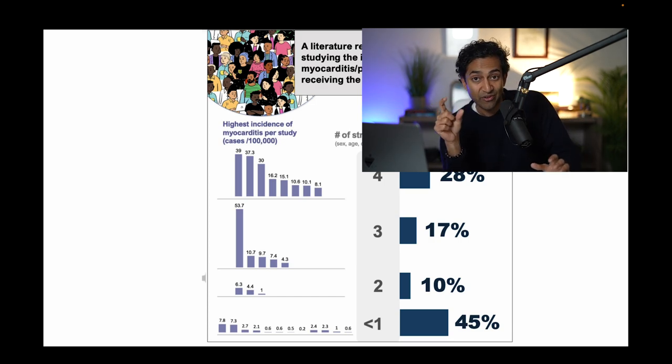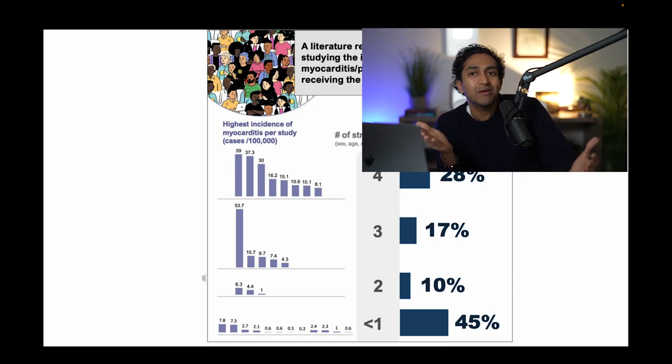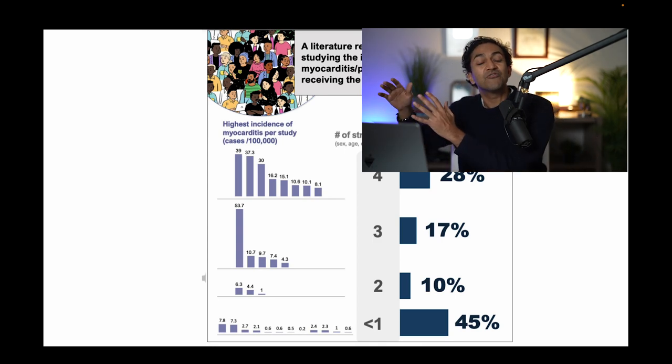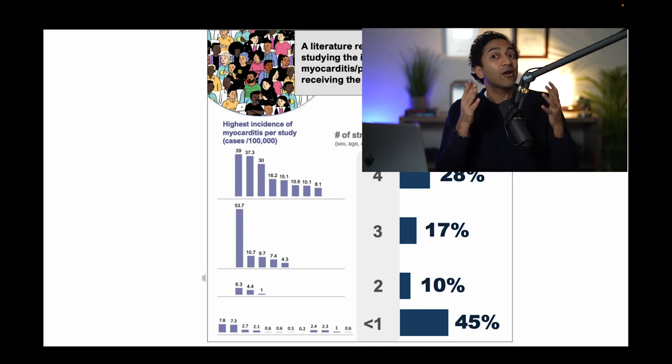And some analyses are wise enough to break it out by all those four stratifiers. And others break it out by three. They lump together Pfizer, Moderna, for instance, and others just use two. And some use one or none at all. And this is what you see on the slide right now.